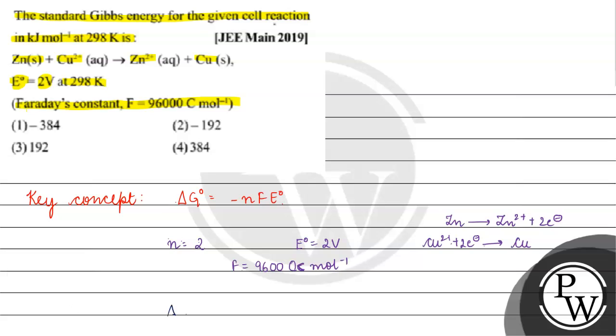Now, we have delta G naught which is minus 2 into F. F is 96,000 Coulomb per mole into E naught. What is E naught? 2 volt.